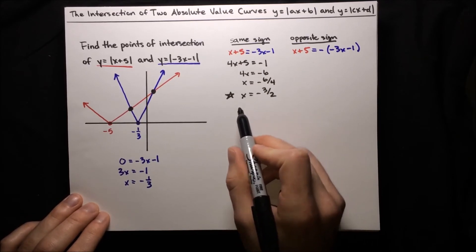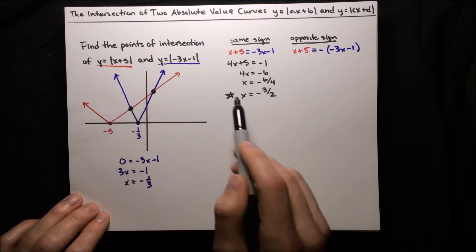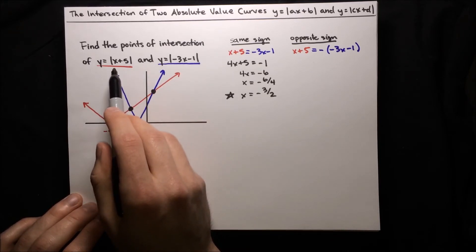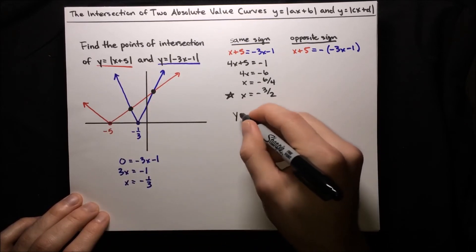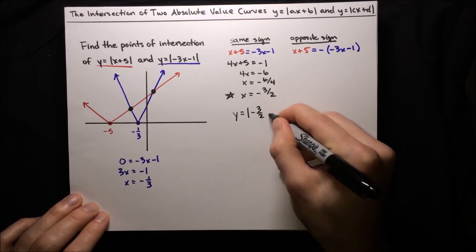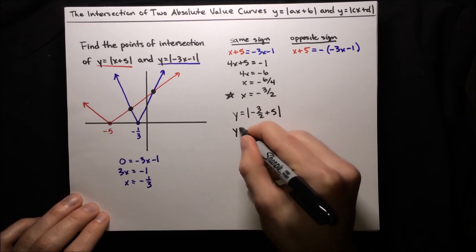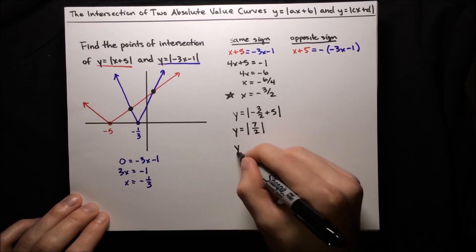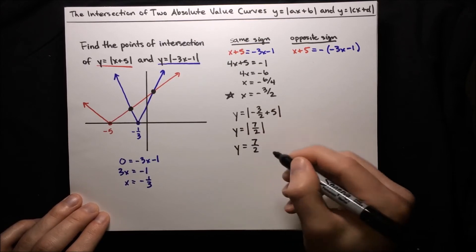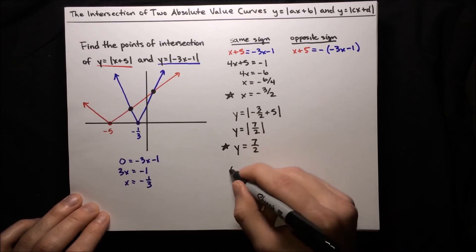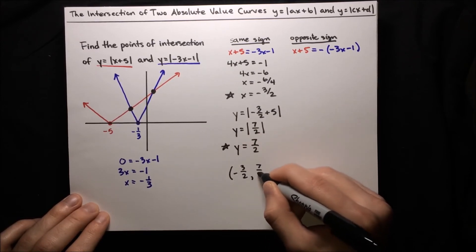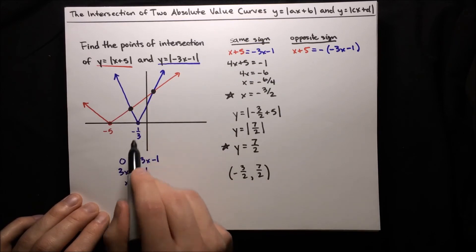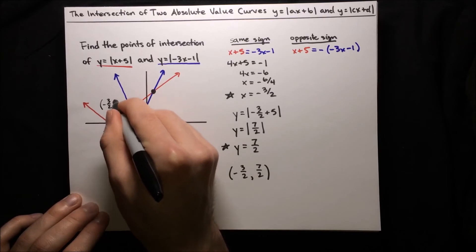But we're not done — we have to substitute to find the y value because we want full points of intersection, not just x coordinates. Let's plug negative 3 halves into the simpler equation: y equals absolute value of negative 3 halves plus 5. Since 5 is 10 over 2, we get negative 3 over 2 plus 10 over 2 equals 7 over 2. The absolute value of 7 over 2 is just 7 over 2. So x is negative 3 over 2 and y is 7 over 2 — that gives us one of the points of intersection, to the left of negative 1 third. We label that point as negative 3 over 2, 7 over 2.